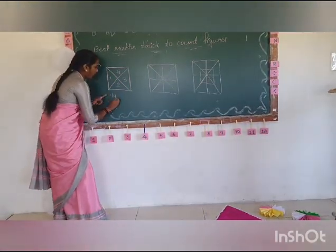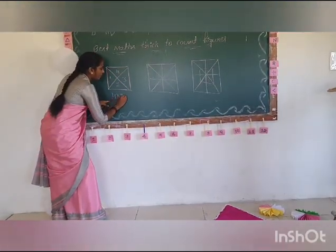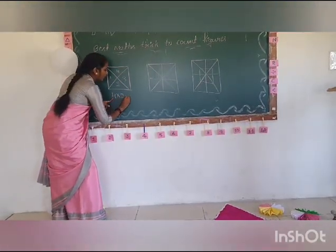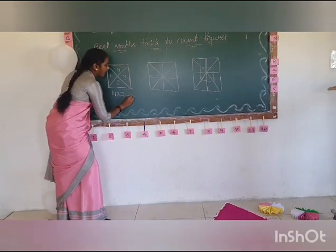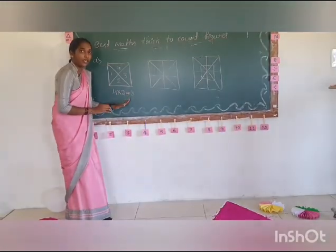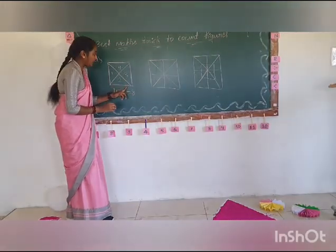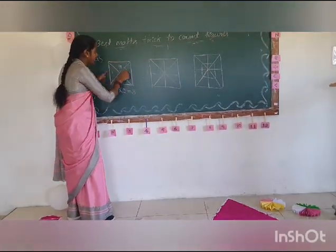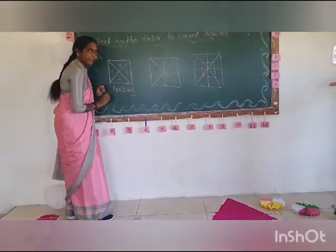So multiply that highest number 4 with 2. You will get 4 twos are 8. So here, total number of triangles inside this square is 8.